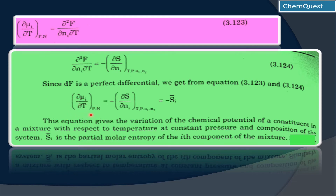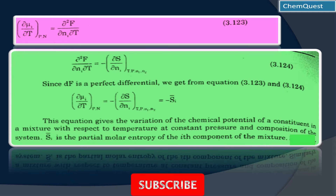This equation gives the variation of chemical potential of a constituent in a mixture with respect to temperature, when pressure and composition are kept constant. S̄ᵢ is the partial molar entropy of the i-th component of the mixture — a bar over any extensive property makes it a partial molar quantity. Hope you have understood; if there is any problem, you are very welcome to ask.